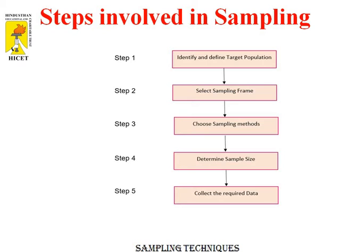There are five steps. Step 1 is identify and define the target population. To carry out opinion polls, polling agencies consider only the people who are above 18 years of age and are eligible to vote in the population.